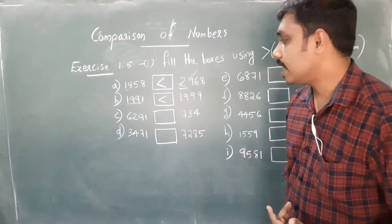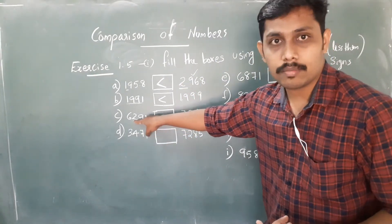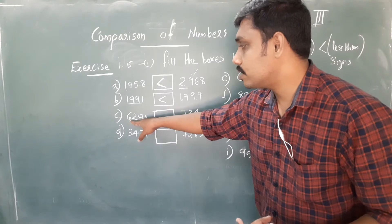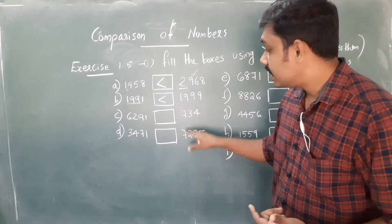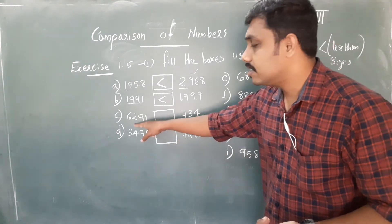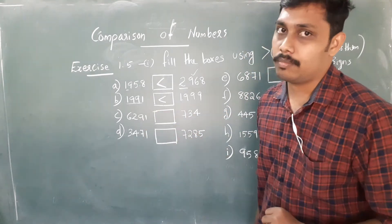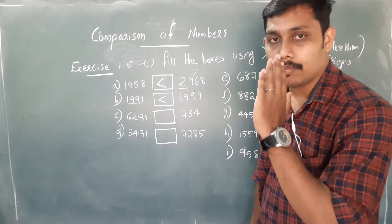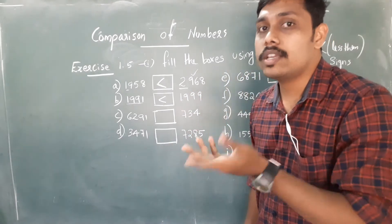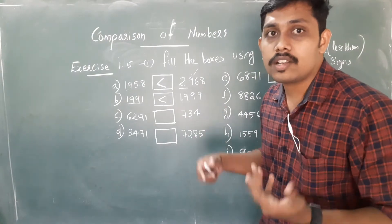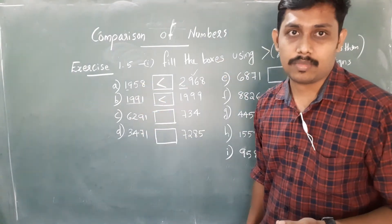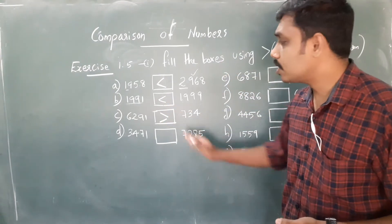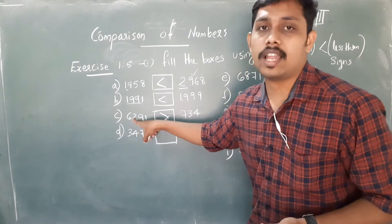Next problem: 6291 and 734. This is a four-digit number and this is a three-digit number. We apply the first rule — the number with more digits is larger. So 6291 is the larger number. We indicate it with the open mouth pointing to the larger number.